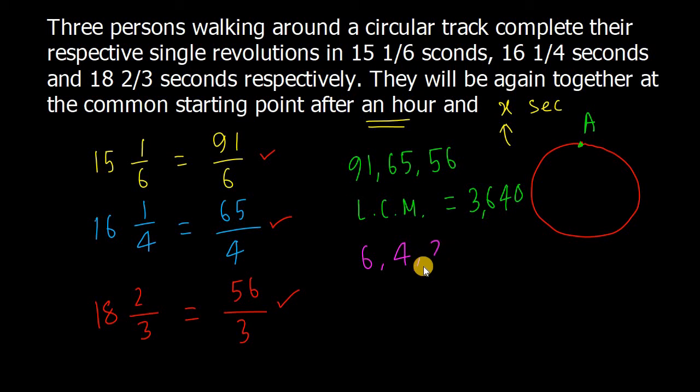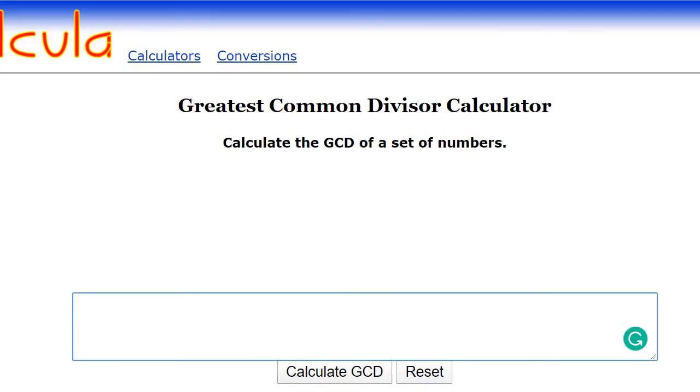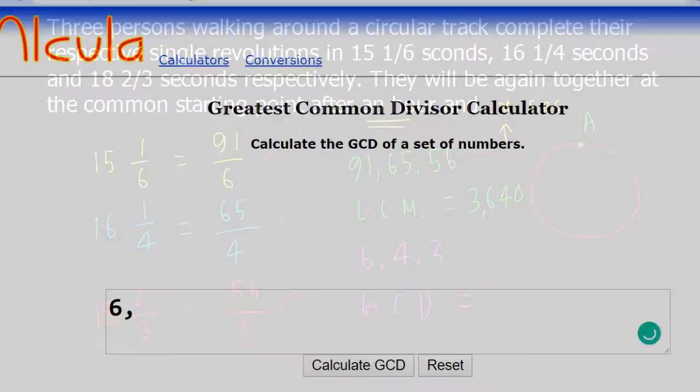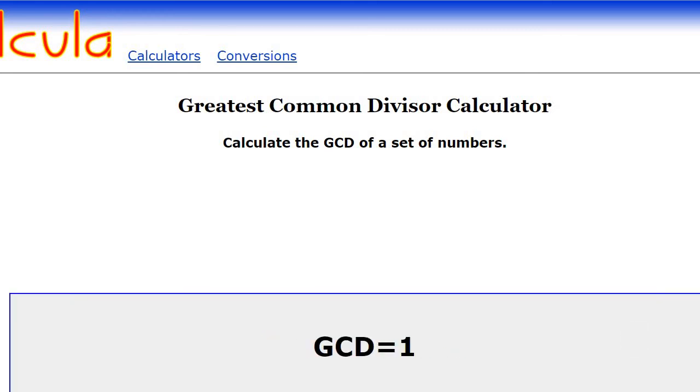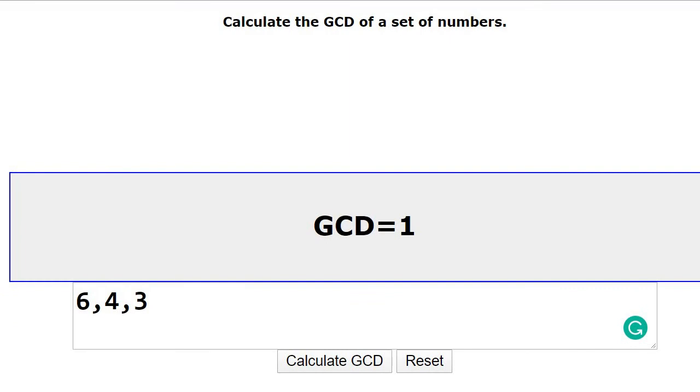We will find the GCD of 6, 4, and 3. Using an online calculator, the GCD of 6, 4, and 3 is 1.